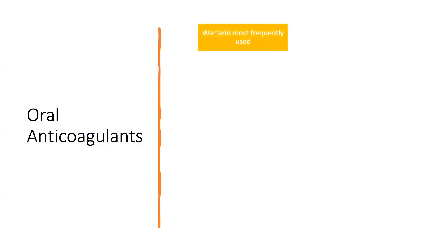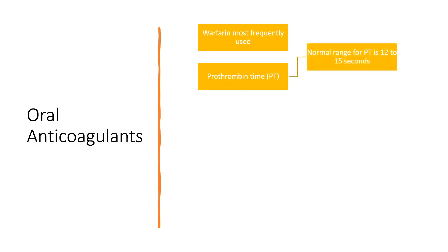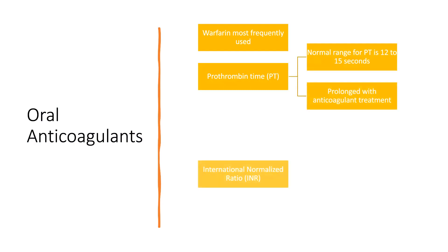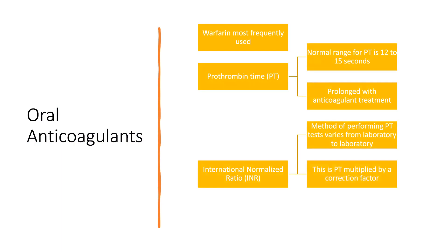Oral anticoagulants include warfarin, the most frequently used. Prothrombin time (PT) must be checked every time a warfarin dose is given — just as glucose is checked in diabetes. The normal range for PT is 12 to 15 seconds, and it is prolonged with anticoagulant treatment. The international normalized ratio (INR) standardizes the PT test across laboratories. These tests range 4 to 4.5 seconds post-treatment.